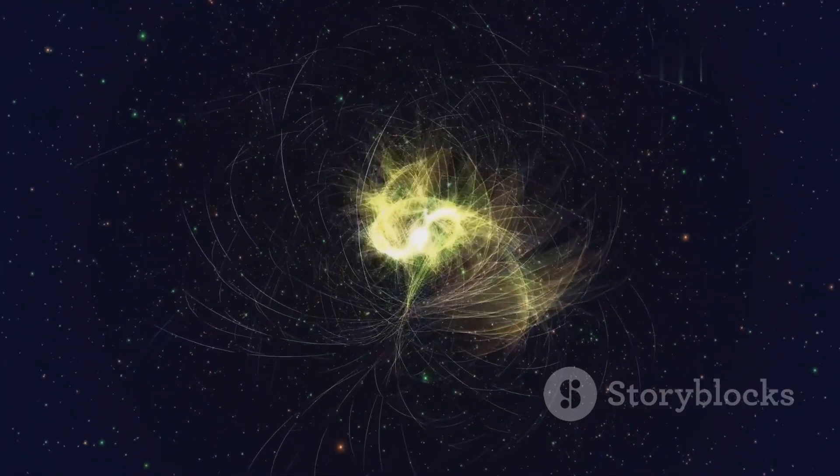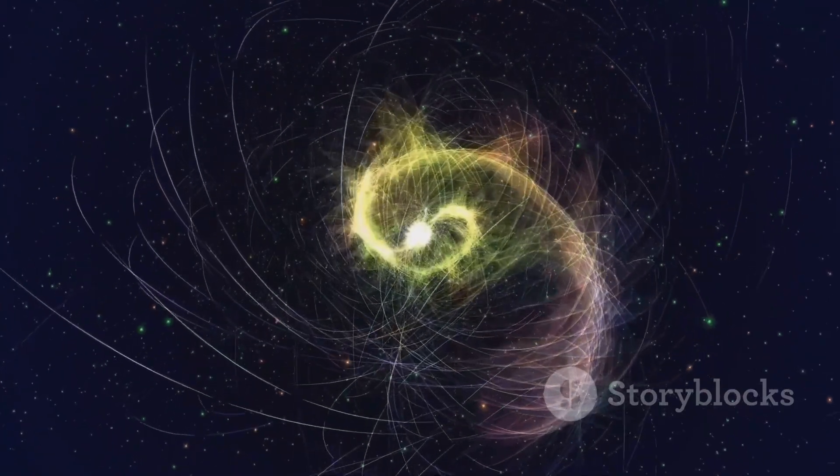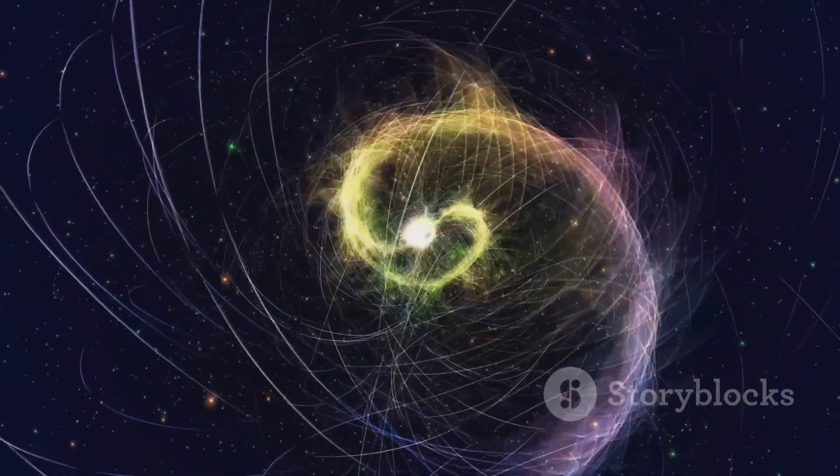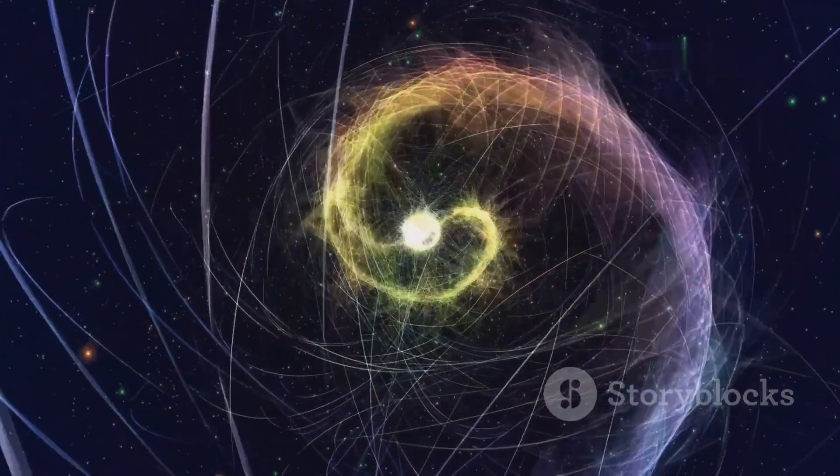For example, strange dips in starlight from distant stars could be signs of massive alien constructs, blocking out parts of the star as they orbit around it.